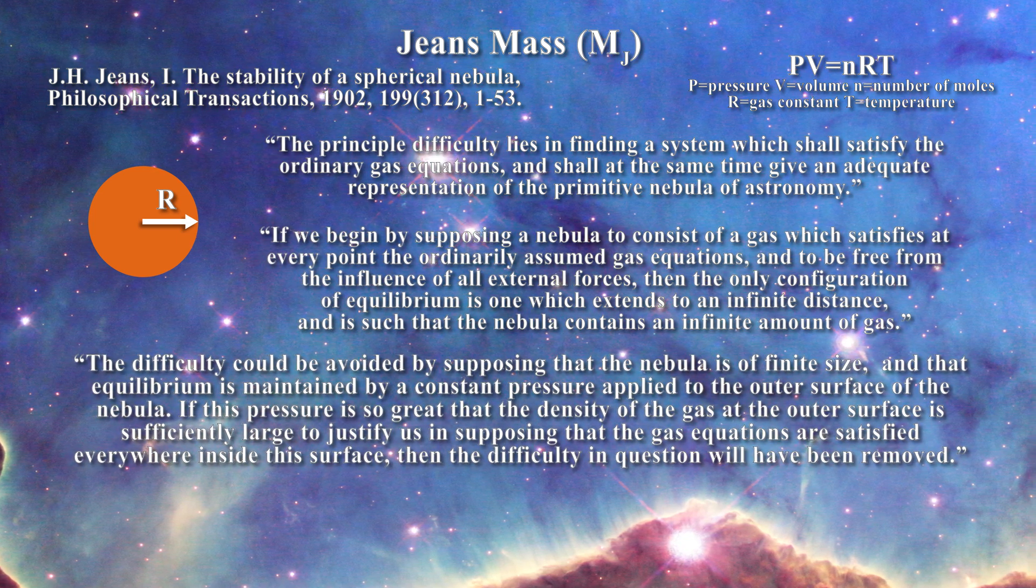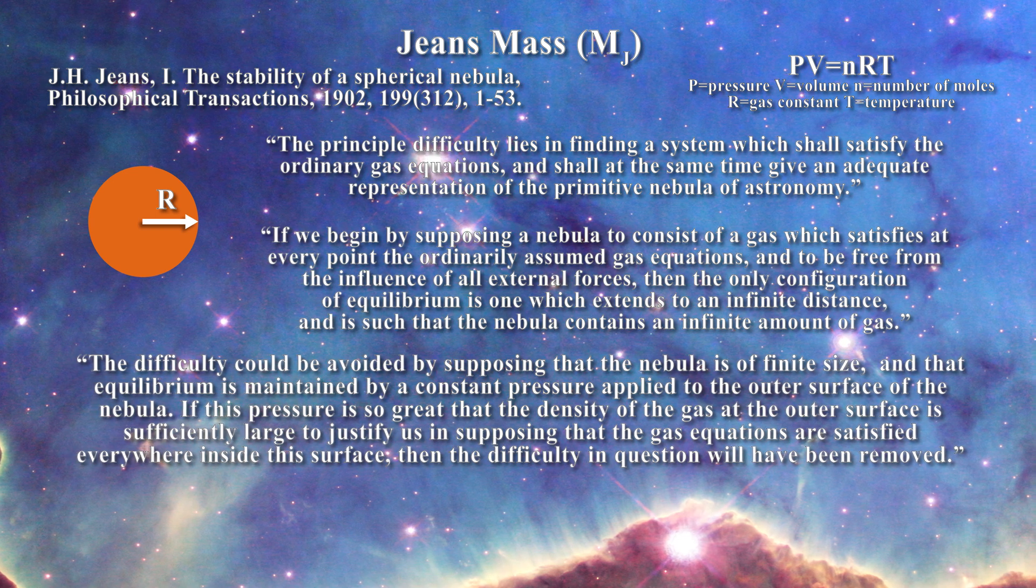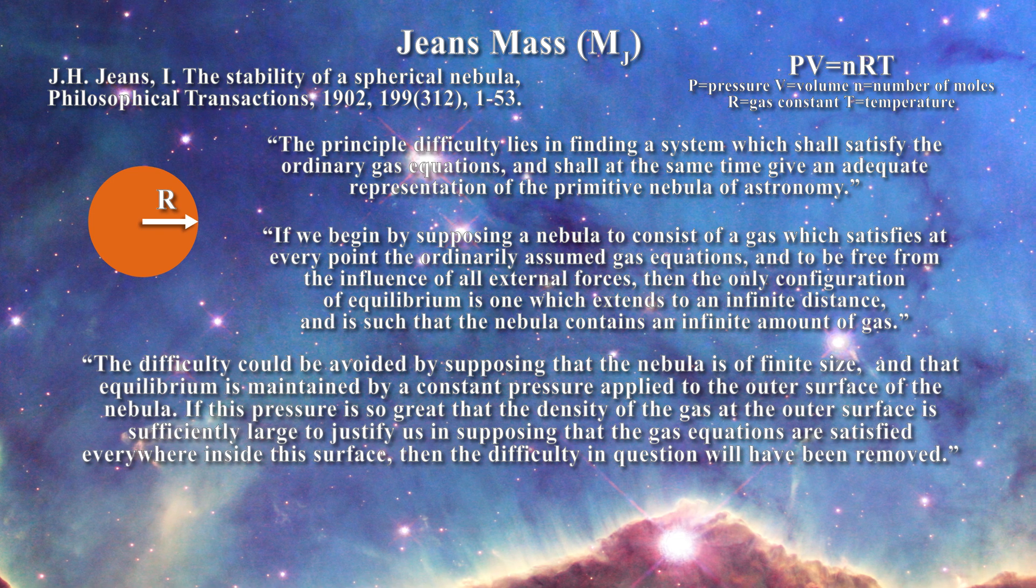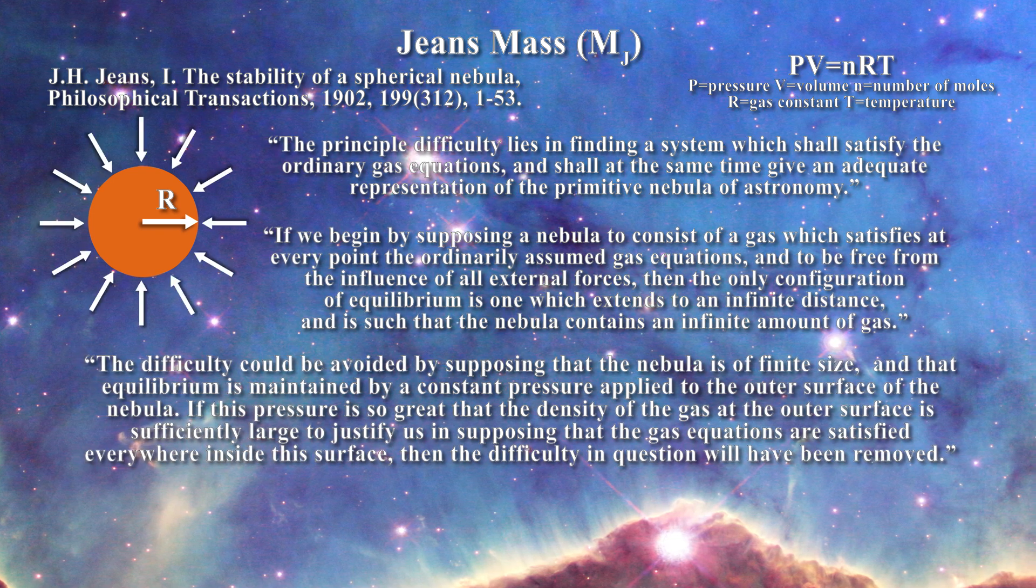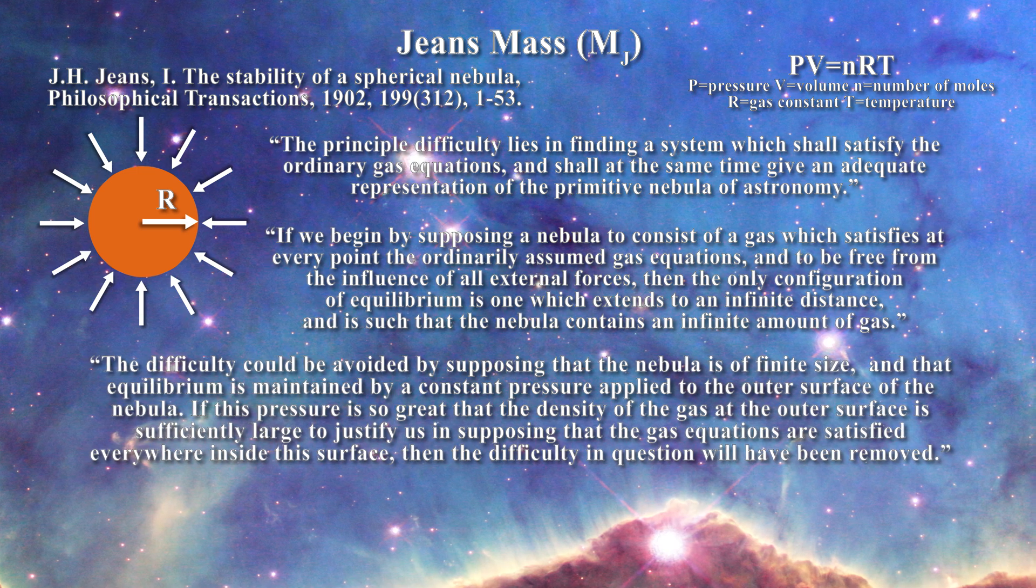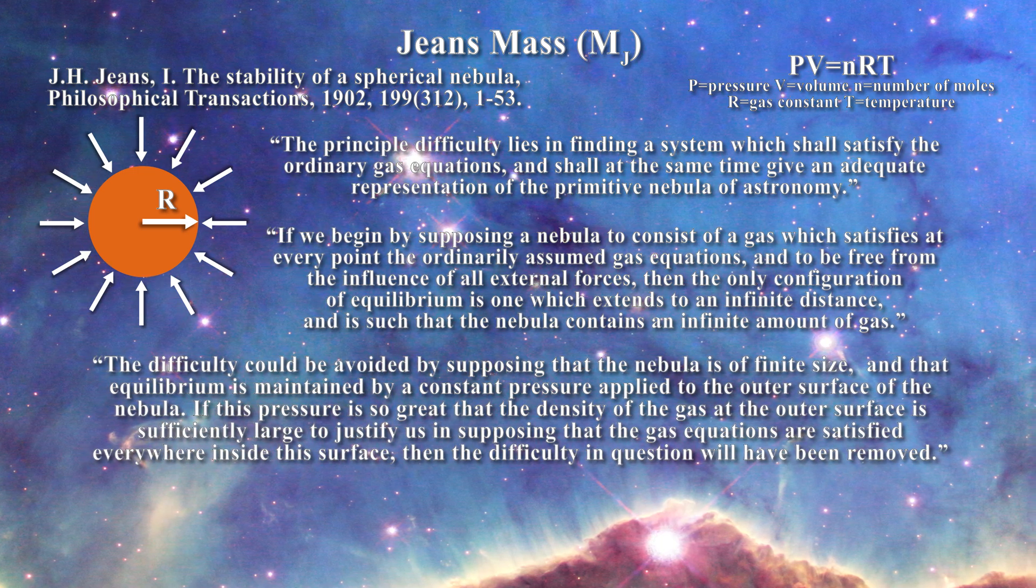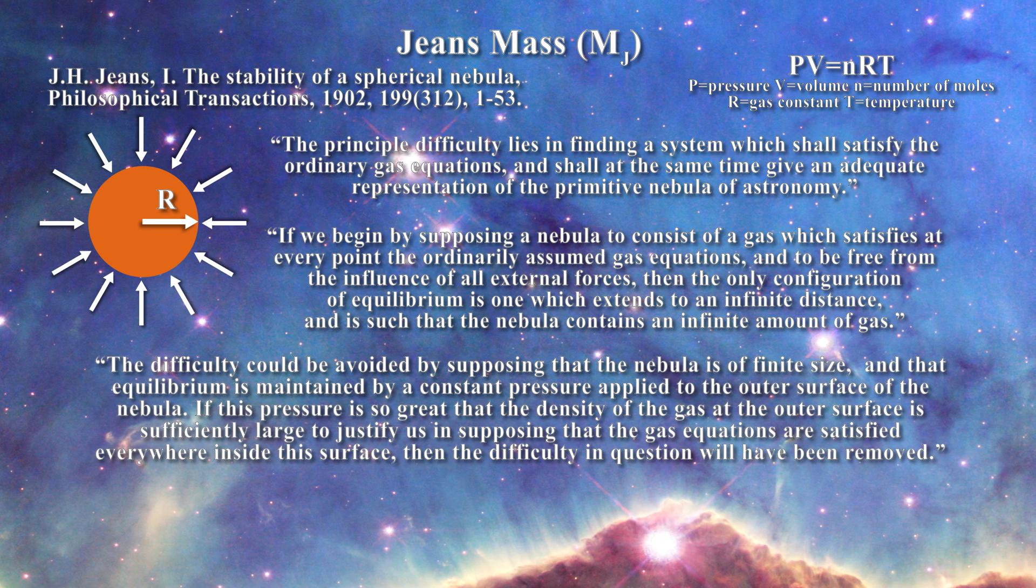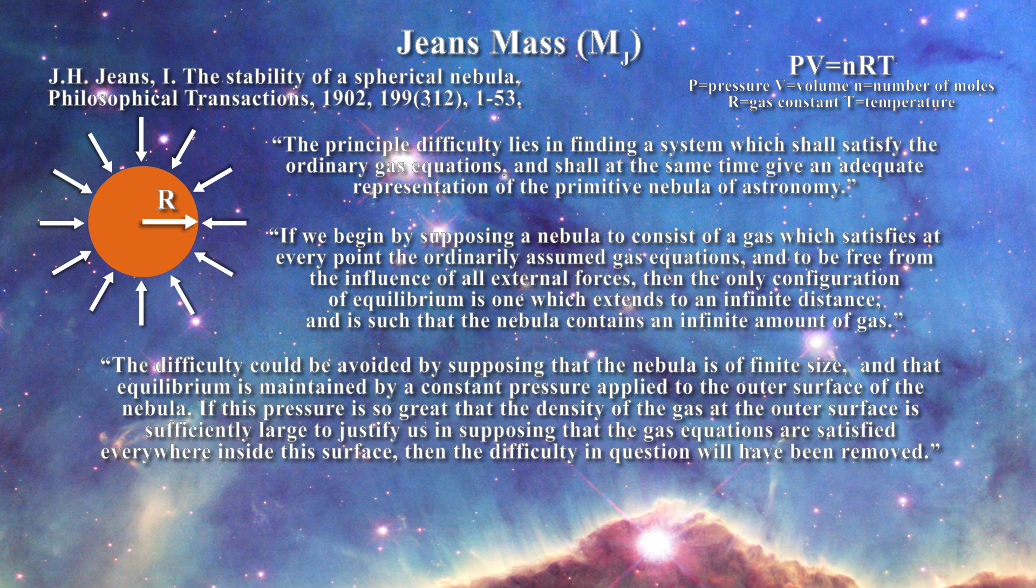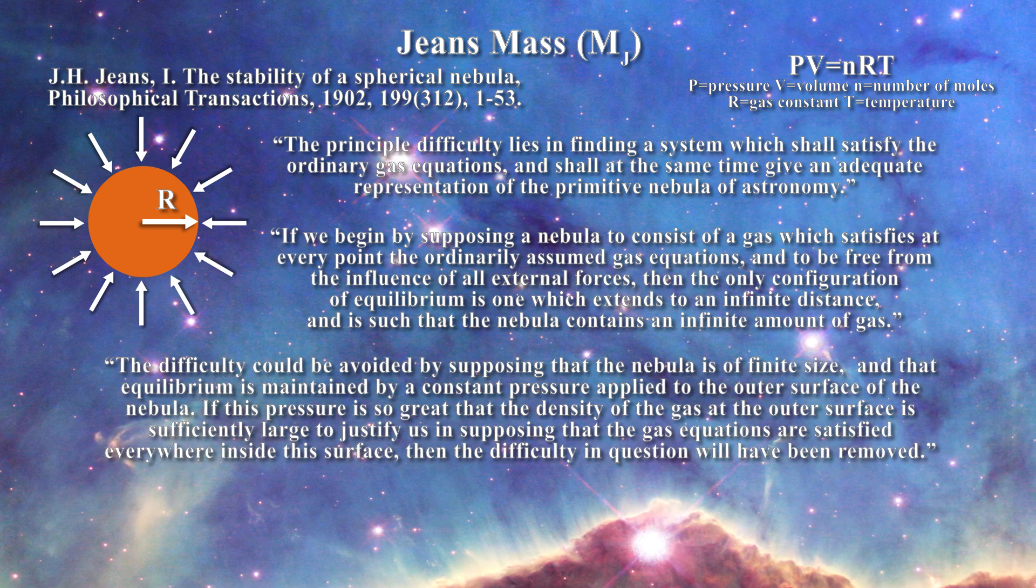He eventually circumvents the problem with these words: The difficulty could be avoided by supposing that the nebula is a finite size and that the equilibrium is maintained by a constant pressure applied to the outer surface of the nebula. If this pressure is so great that the density of the gas at the outer surface is sufficiently large to justify us in supposing that the gas equations are satisfied everywhere inside the surface, then the difficulty in question will have been removed.